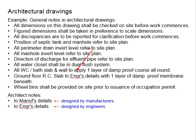Next: all water closet or bath slabs and walls are to apply one layer of damp proof course all around. This is for waterproofing purposes — a layer of damp proof membrane should be applied to prevent water leakage through walls and slabs, which would affect the durability of the structure due to corrosion of reinforcement in structural members, as well as to prevent aesthetic issues such as watermarks on ceilings.